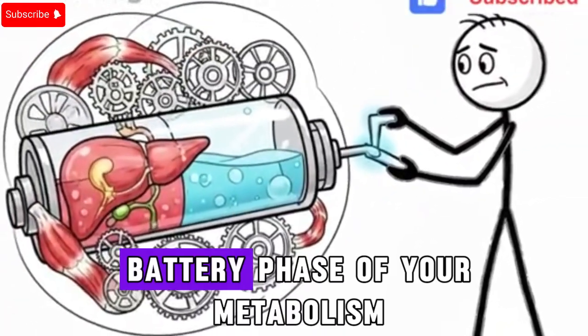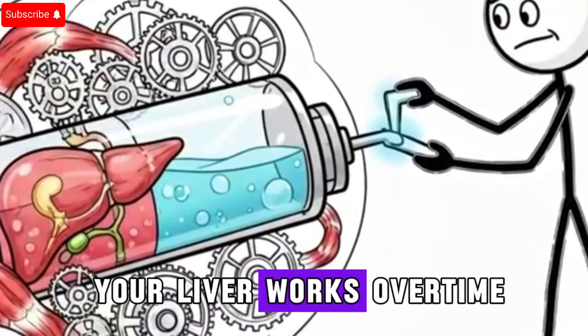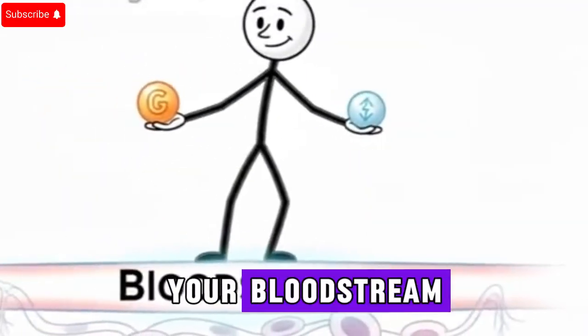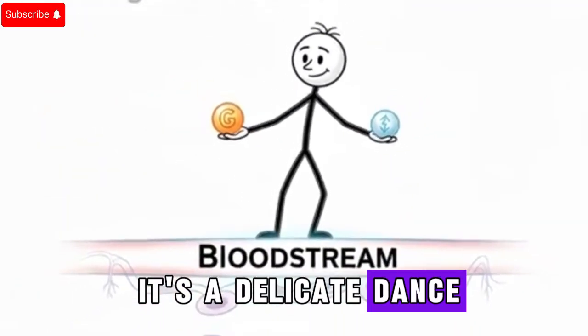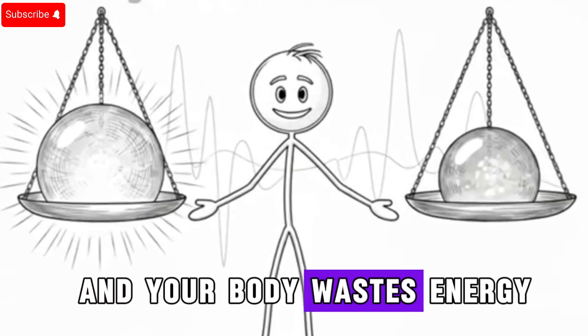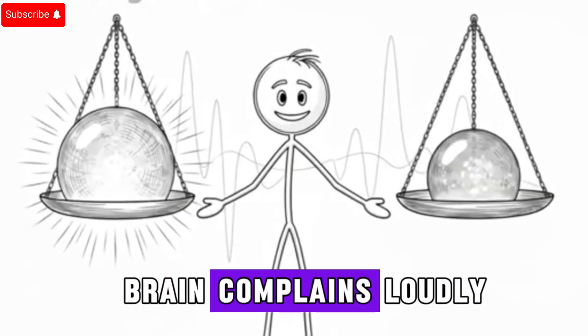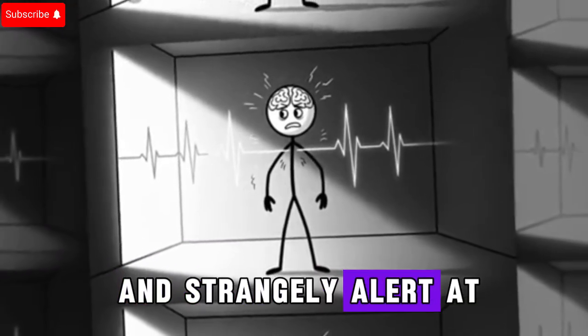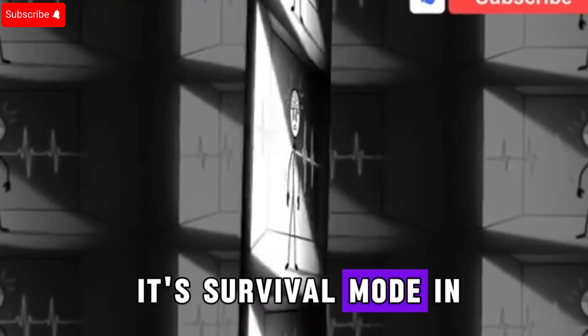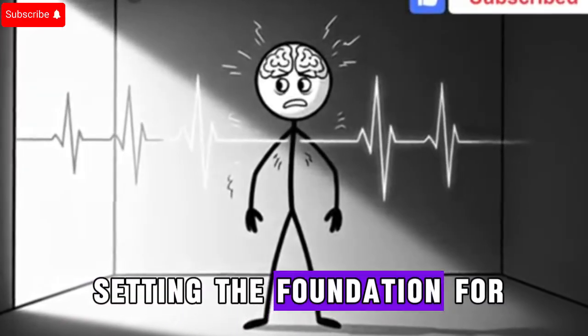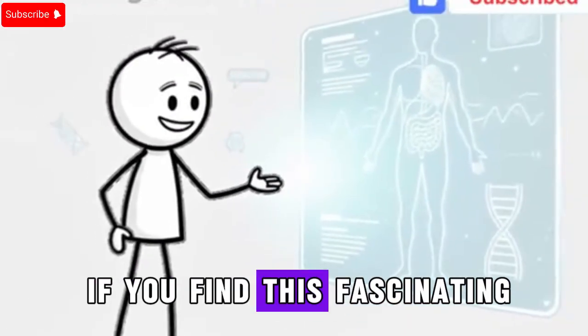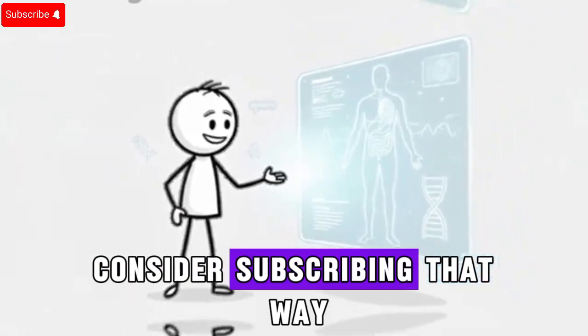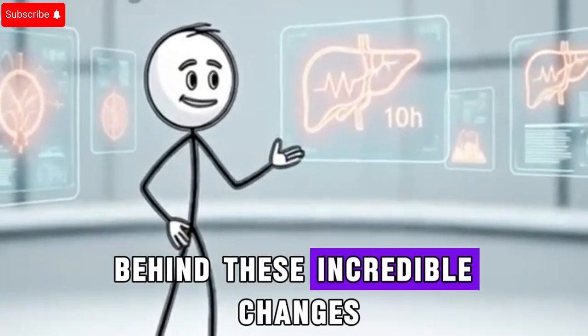This is the backup battery phase of your metabolism. Your liver works overtime, breaking down glycogen into glucose to maintain balance in your bloodstream. It's a delicate dance. Too much glucose released and your body wastes energy. Too little and your brain complains loudly. This process is what makes you feel both tired and strangely alert at the same time. If you find this fascinating and want to keep learning how your body transforms during fasting, consider subscribing.